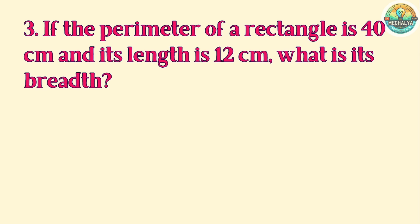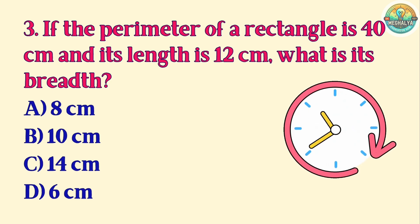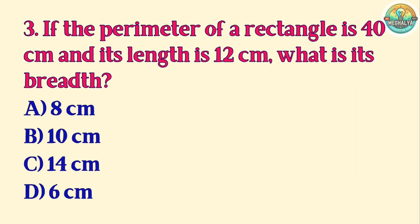Question 3. If the perimeter of a rectangle is 40 cm and its length is 12 cm, what is its breadth? A. 8 cm. B. 10 cm. C. 14 cm. D. 6 cm. Correct answer is D. 6 cm.